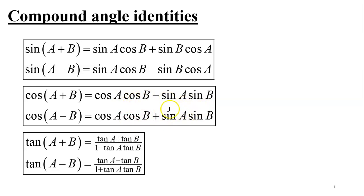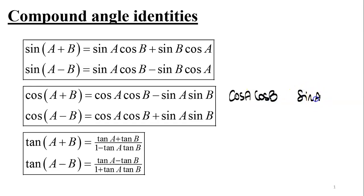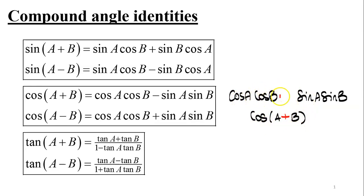The compound angle identities of cosine both consist of the terms cosine a cosine b and sine a sine b. The key difference between the two identities is the sign. For cosine of a plus b, those two terms are separated by a negative, so cosine of a plus b equals cosine a cosine b minus sine a sine b.